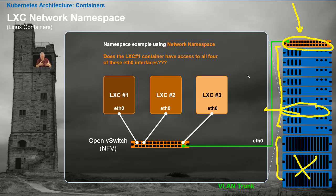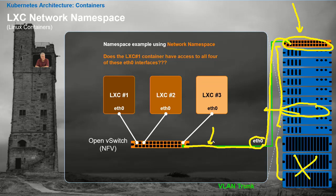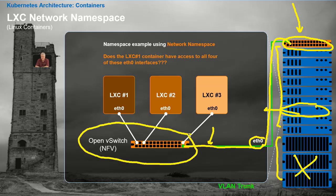Let's zoom in on one particular compute node. We're going to find a Linux operating system in there running LXC — Linux Containers. I see a physical 10 gigabit per second ethernet cable coming in, entering physical ethernet interface eth0, then coming into network function virtualization — probably a VLAN trunk or possibly VXLAN. We see an Open vSwitch network function virtualization.